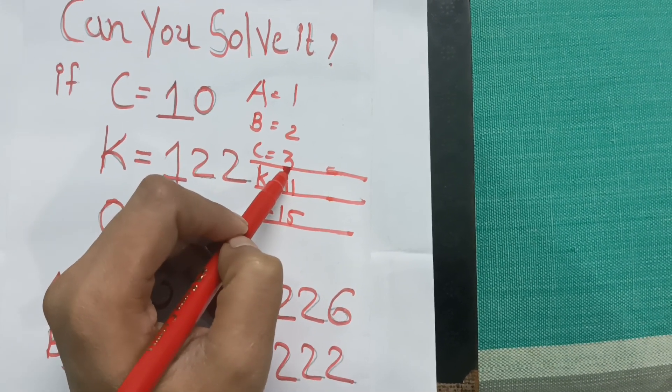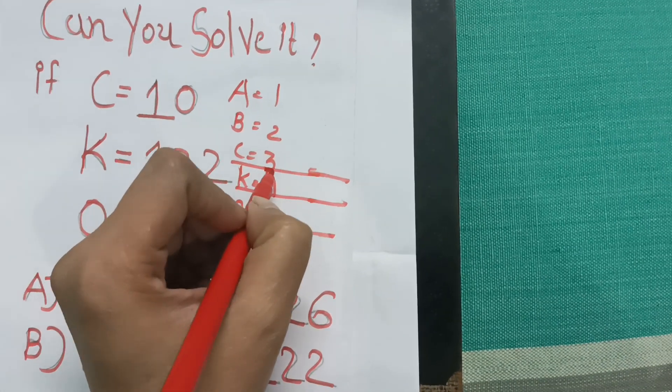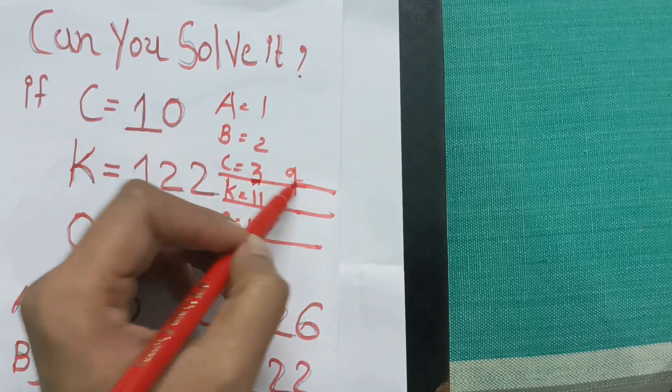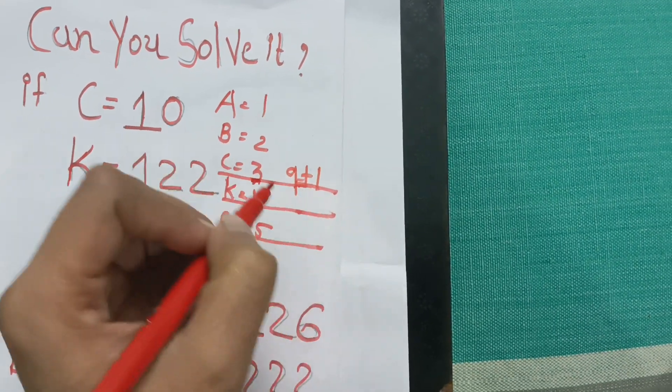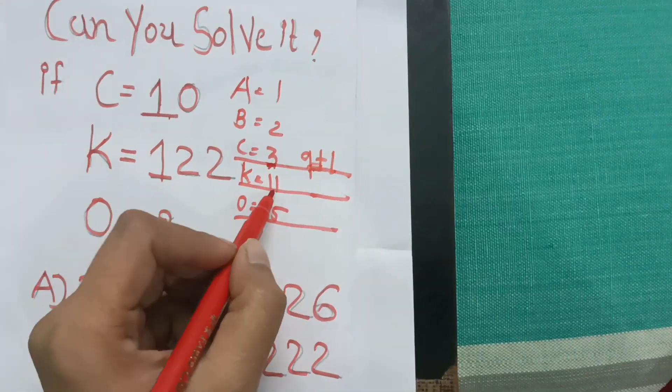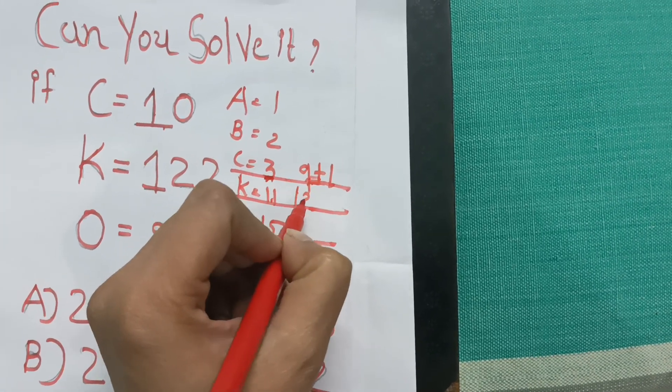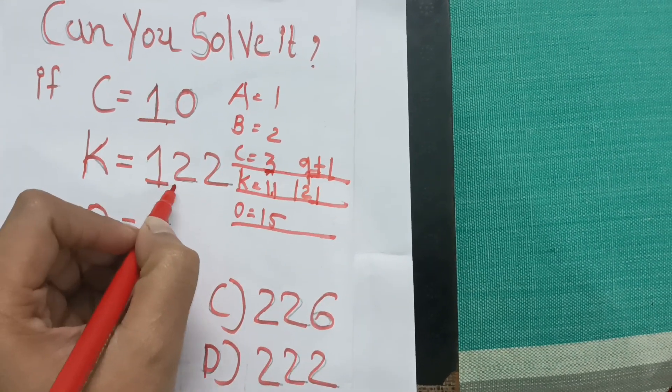So 3 squared is 9, and what is the difference? Plus 1. 9 plus 1 equals 10. 11 squared is 121, and what is the difference? Plus 1.